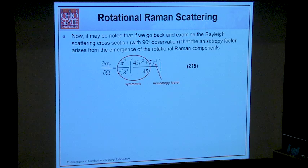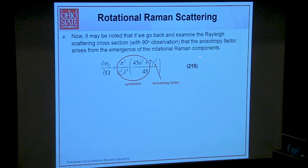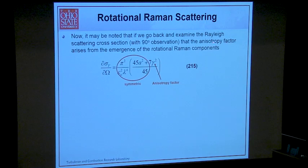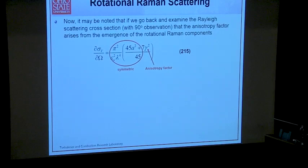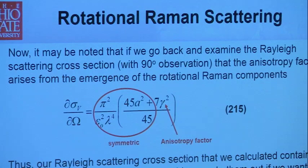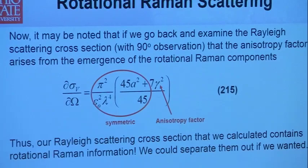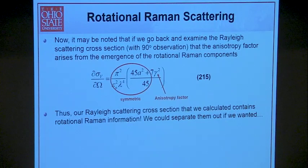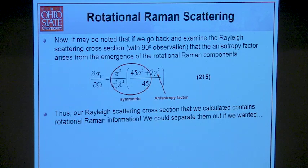Going back to the Rayleigh scattering cross-section at 90-degree observation, we can pick out the anisotropy factor — it turns out to be the major portion of the cross-section. This anisotropy factor arises from the rotational Raman component, due to rotation of the molecule with respect to the electric field during polarization. So this anisotropy factor is actually part of the Rayleigh scattering cross-section but comes from rotational Raman. All Rayleigh cross-sections in the literature contain rotational Raman information.